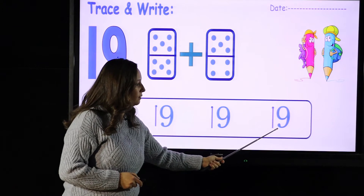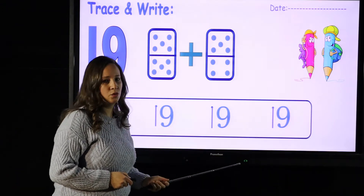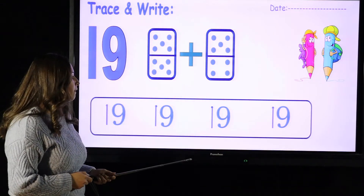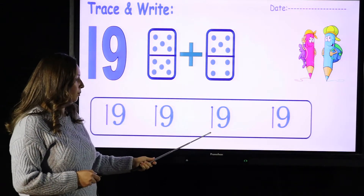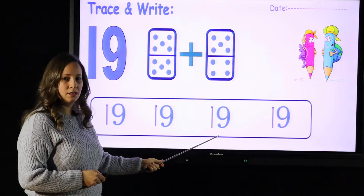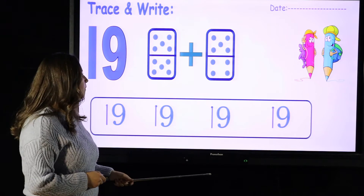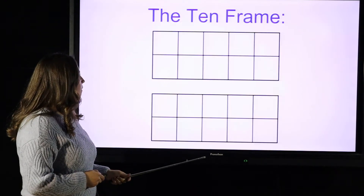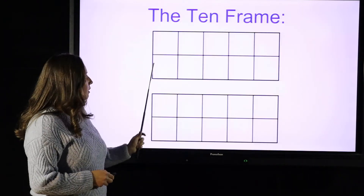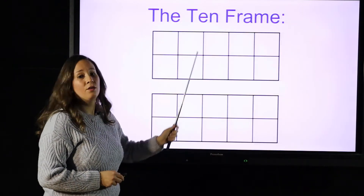Then for nine, you go up, round, round, round, closing the circle, then you slide back to the left. This is how we write number 19. Remember, this is called the 10 frame.